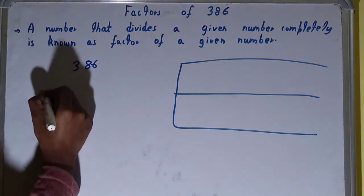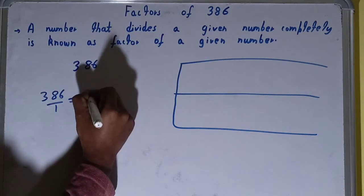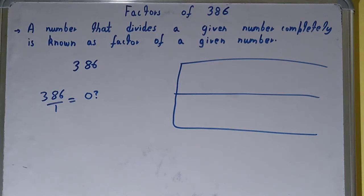Divide the number 386 by 1. If we do so, will you get the remainder as 0? The answer is yes. So because you will get the remainder 0, 1 is the factor of 386. So 1 we can write it over here in the factor list.